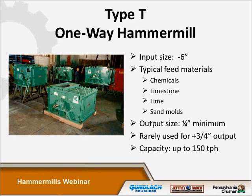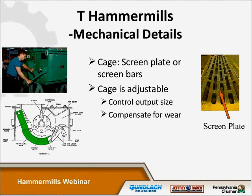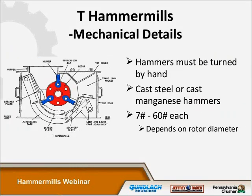Anything bigger than about three quarters or one inch as an output size, we'd probably look at using another type of machine such as an impactor or a roll crusher, because the larger output size wouldn't justify the horsepower and wear cost of a hammer mill. Capacities for the T-mills generally range up to about 150 tons per hour. To control the product output size, the T hammer mill uses either screen bars or screen plate. The cage is adjustable to compensate for wear and to make slight changes in output size.